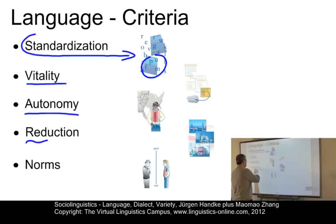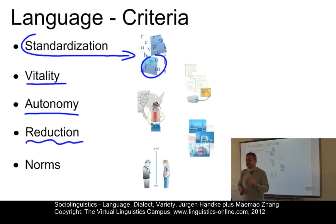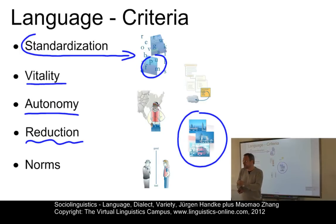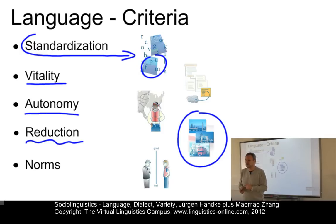Reduction is an interesting criterion. Reduced written standards and reduced functions in society help to distinguish varieties from standard languages. In London there are many speakers of Cockney, a well-known variety of present-day English. But they will admit they are not representative speakers of standard English — they are using, to some extent, a reduced variety.